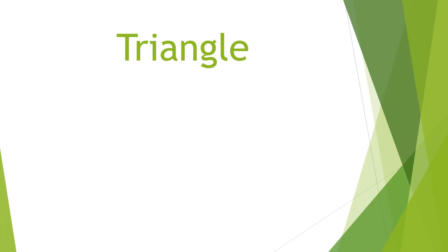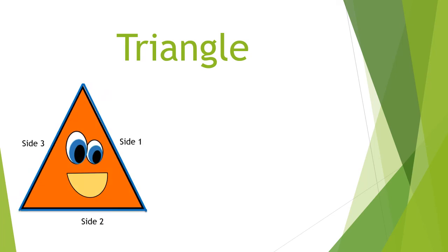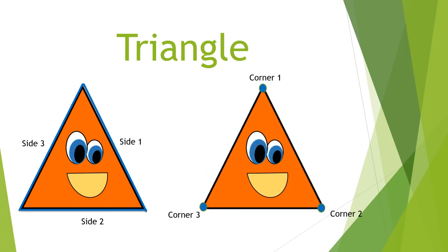The third two-dimensional shape is a triangle. This is how a triangle looks like. Let's count the sides and corners of this triangle. Side 1, side 2, and side 3 — so a triangle has three sides. Now counting the corners: corner 1, corner 2, and corner 3. So a triangle has three sides and three corners.